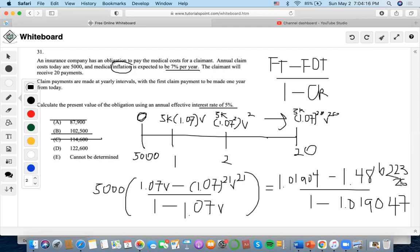1.01904 minus 1.48623 divided by 1 minus 1.01904 times 5,000, which this time I got 122,639. So, a little bit smaller than what I originally got, but between choices D and E, we know that the answer is definitely able to be determined.